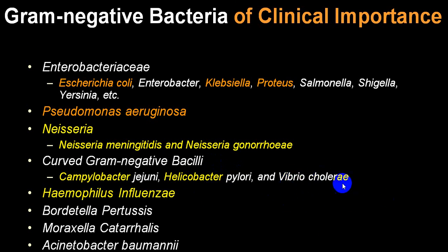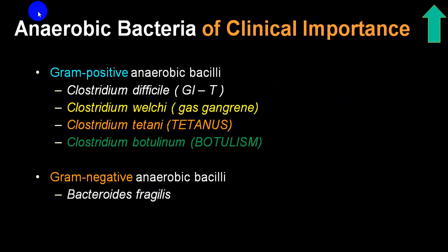Vibrio cholerae causes cholera; H. influenzae causes respiratory infections. Among anaerobic gram-positive organisms, the clostridium group is most important: Clostridium difficile causes GI tract infection, Clostridium welchii causes gas gangrene, Clostridium tetani causes tetanus, and Clostridium botulinum causes botulism. Among gram-negative anaerobes, Bacteroides fragilis is an occasional organism that can involve abdominal organs.